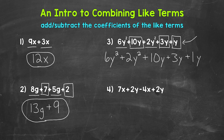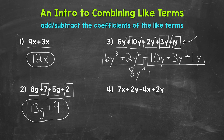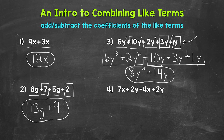Now we can combine like terms. We will start with 6y squared plus 2y squared — add the coefficients: 6 plus 2 is 8, giving us 8y squared. Then we can combine the y terms: 10 plus 3 plus 1 — 10 plus 3 is 13, plus 1 is 14 — giving us 14y. So we get 8y squared plus 14y, and that's the simplified expression. We now have an equivalent expression that is simpler than the original. We went from 5 terms to 2 terms.